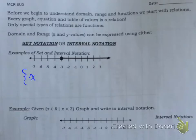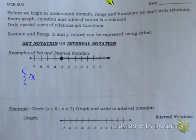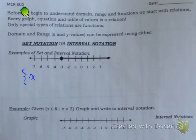Alright folks, so what we have here is we have to be able to understand what's going on. In this particular unit, we're going to focus on a couple of things. Specifically, before we begin to understand the domain and range and functions, we start off with something called relations. What is a relation? Well, every graph, every equation, every table of values is a relation.